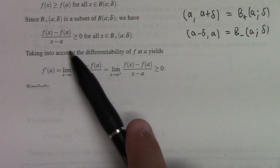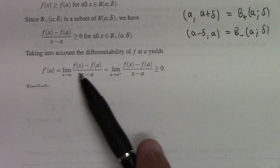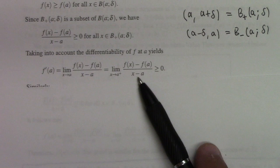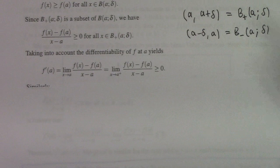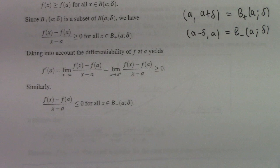Because we're assuming f is differentiable, it follows that the limit of that difference quotient as x goes to a is f'(a), and the left and right limits must agree. So the right limit of f(x) minus f(a) over x minus a has to be greater than or equal to zero. Similarly, f(x) minus f(a) over x minus a is less than or equal to zero for all x in B−.